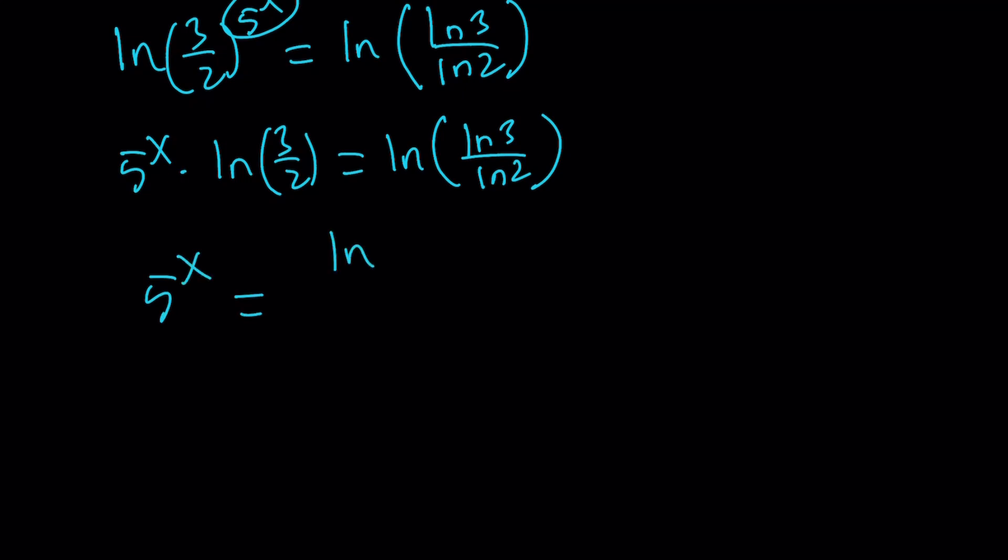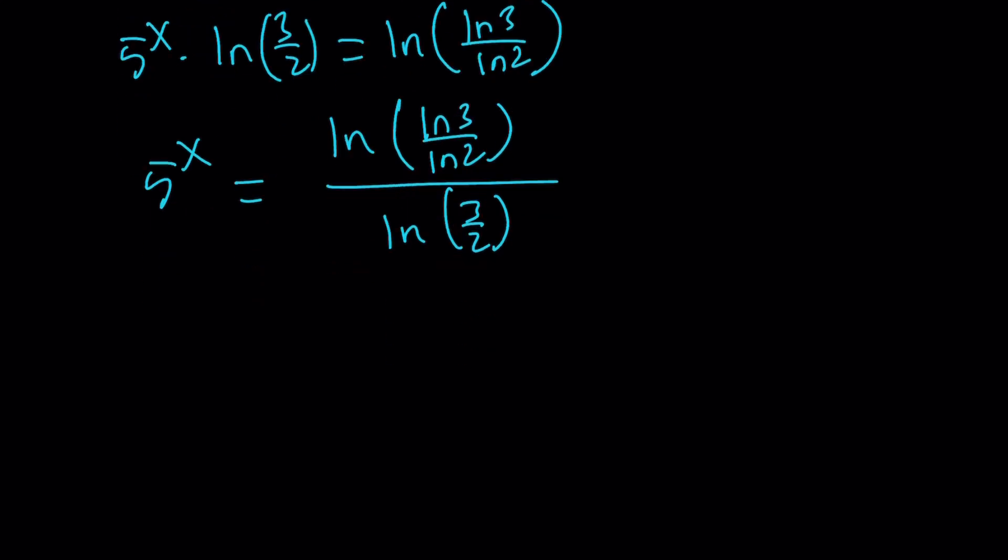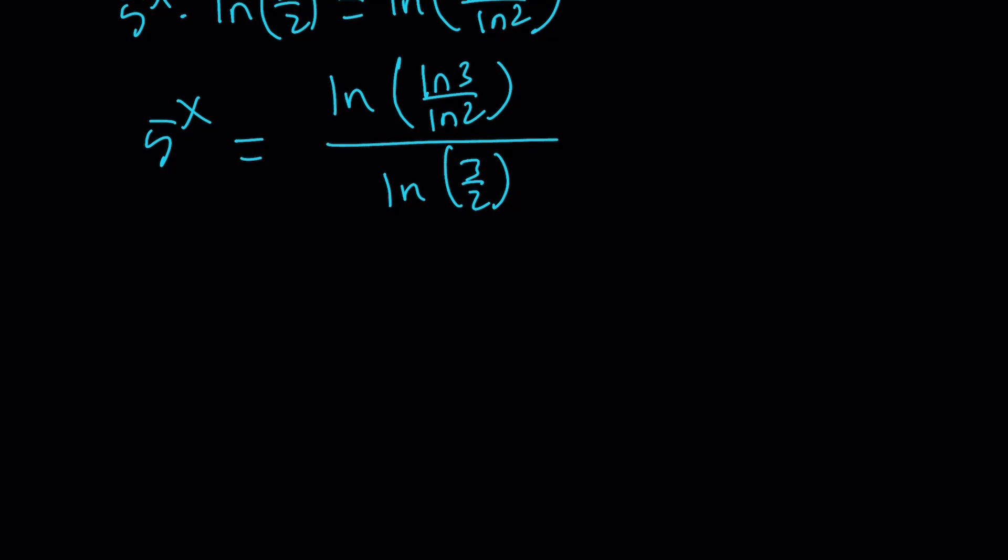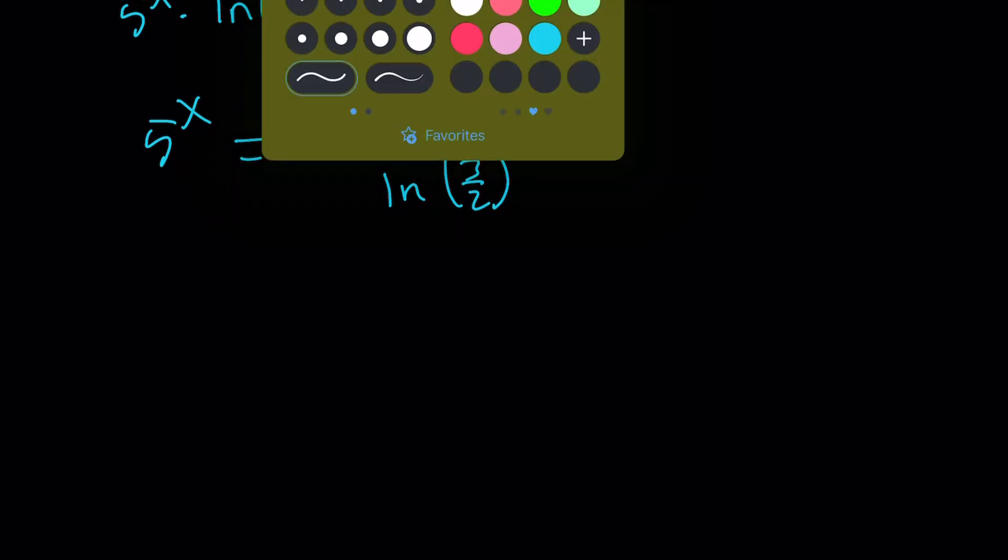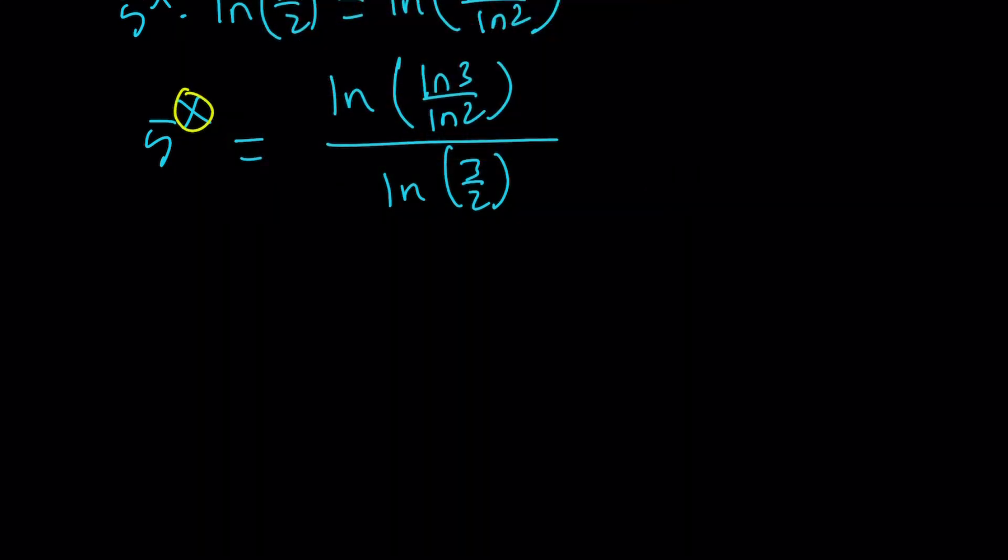So we can write 5 to the x as the quotient of these two things. And now, we need to get rid of the x or bring it down. And x is the exponent, so we need to ln both sides one more time, and guess what? This is going to be the last time we do it.